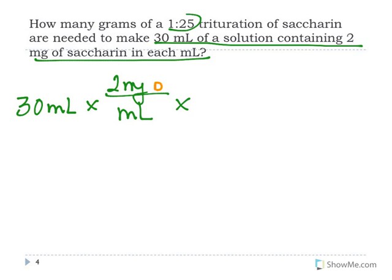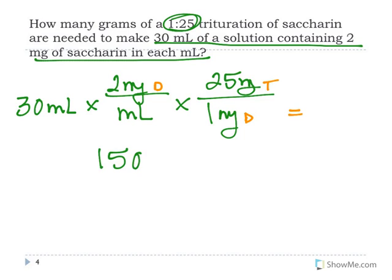And again, we can use milligrams because our trituration is a ratio. So for every 1 milligram of drug in that trituration, we're going to have 25 milligrams of the actual trituration itself. And so again, in solving for this, we're going to find that this ends up being 1500 milligrams of the trituration, but because we're being asked for an answer in grams, we're going to double check back, and we're going to convert that to 1.5 grams.